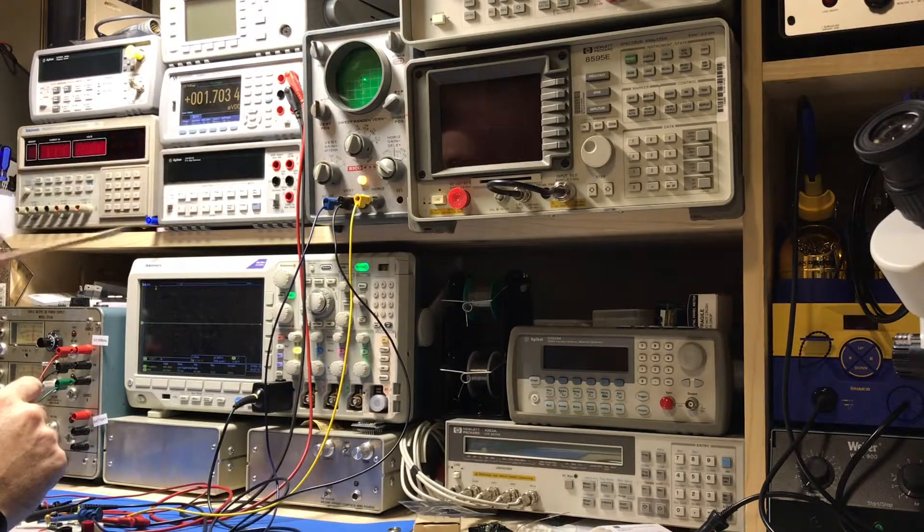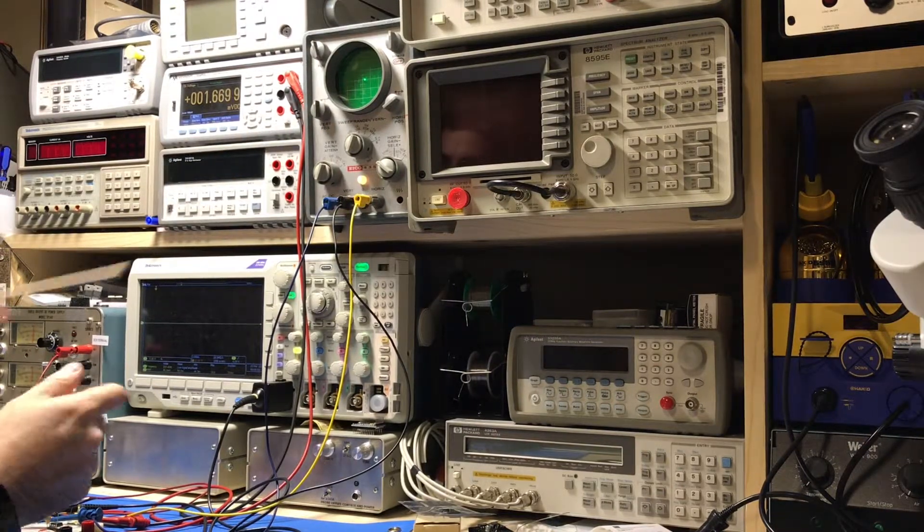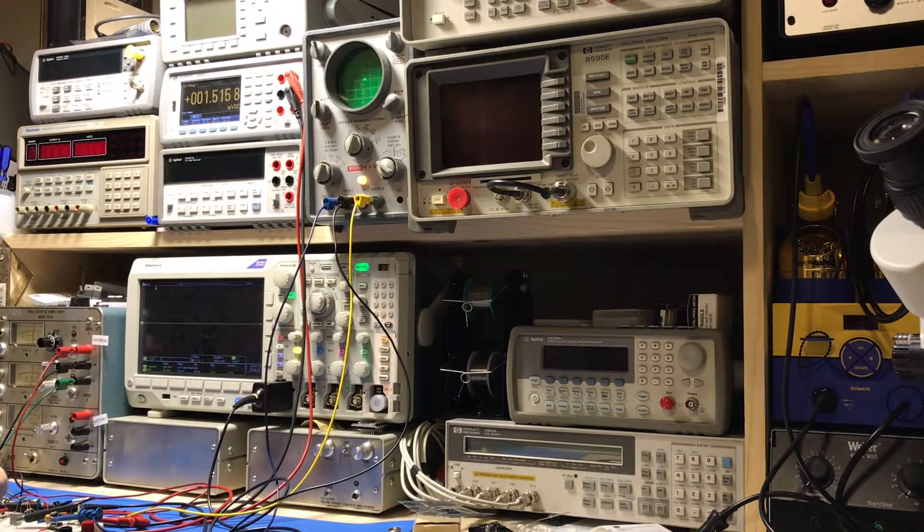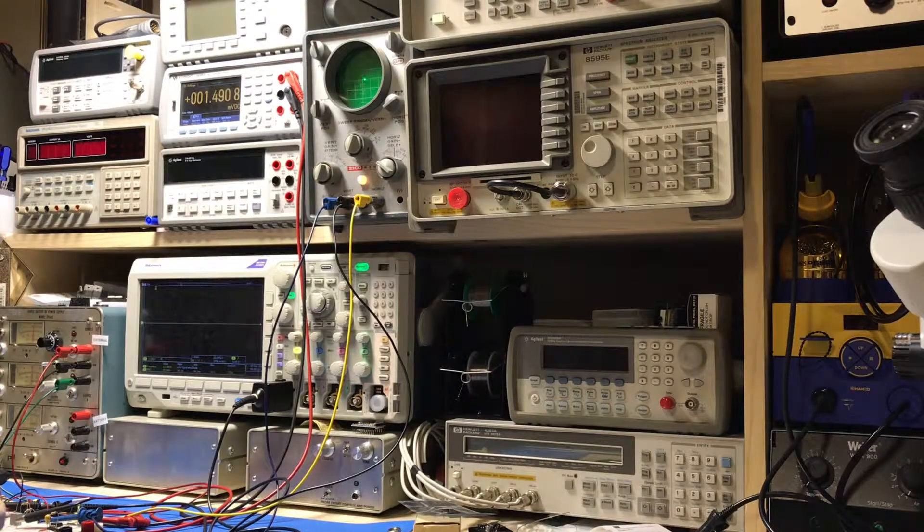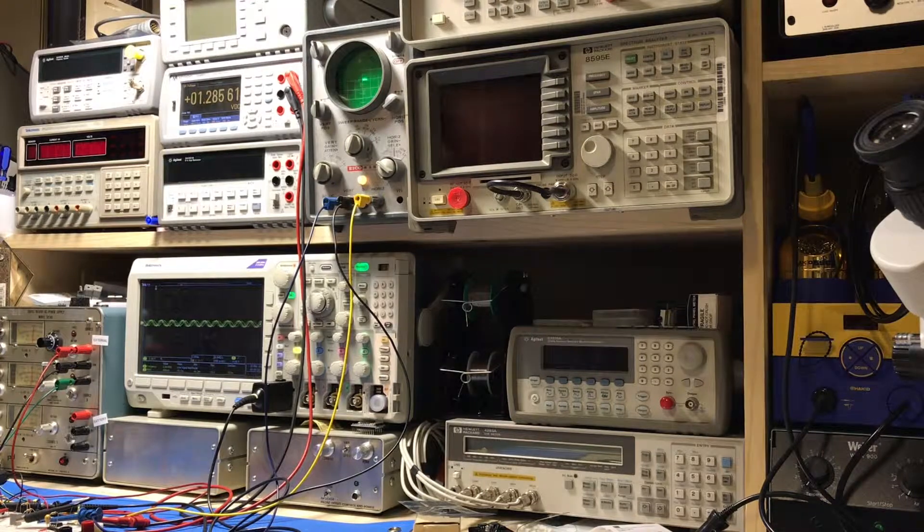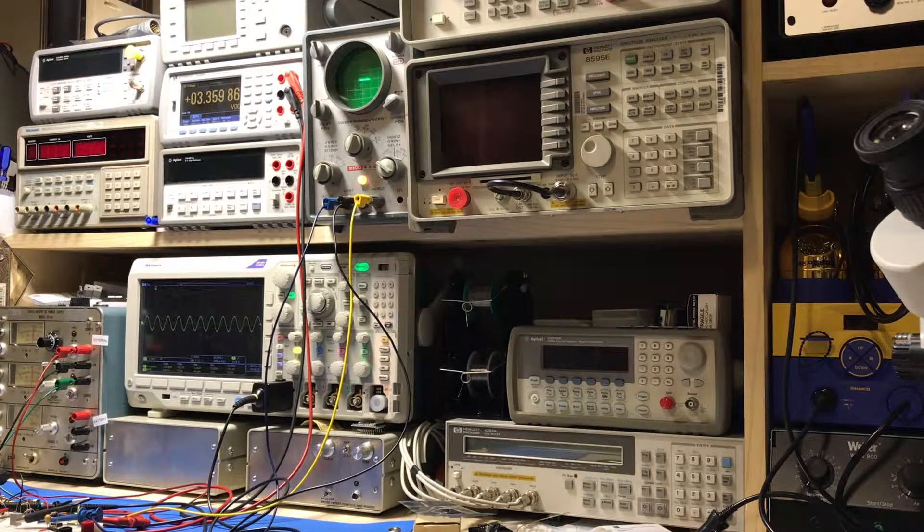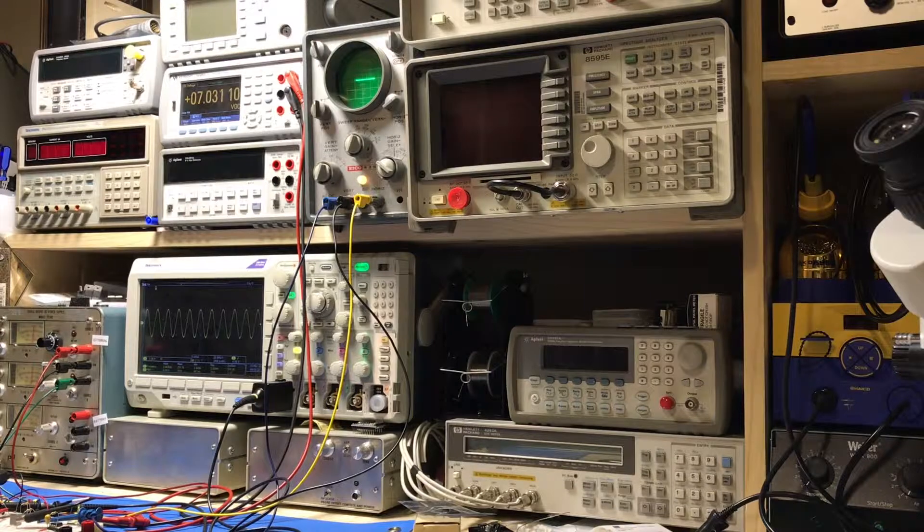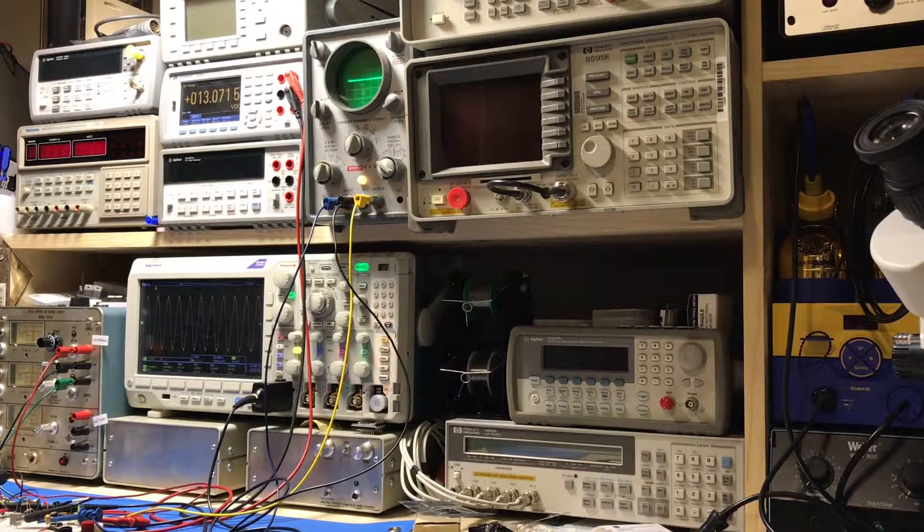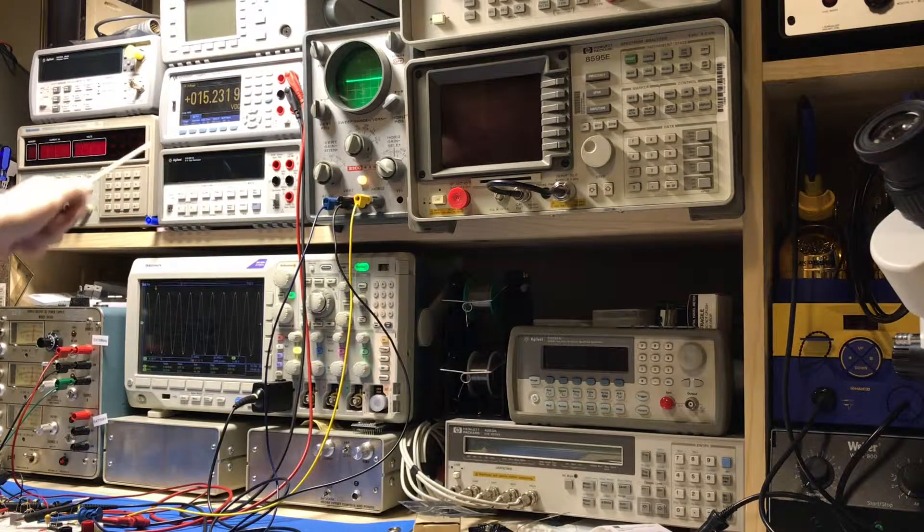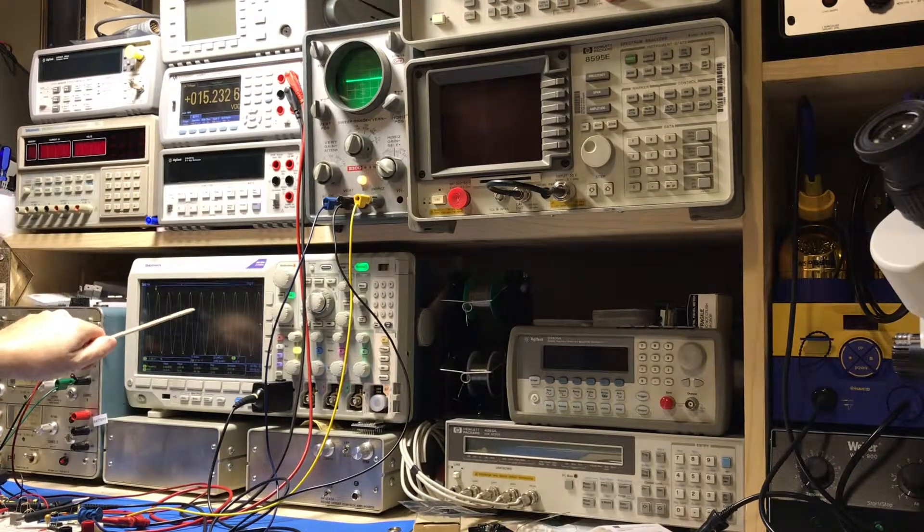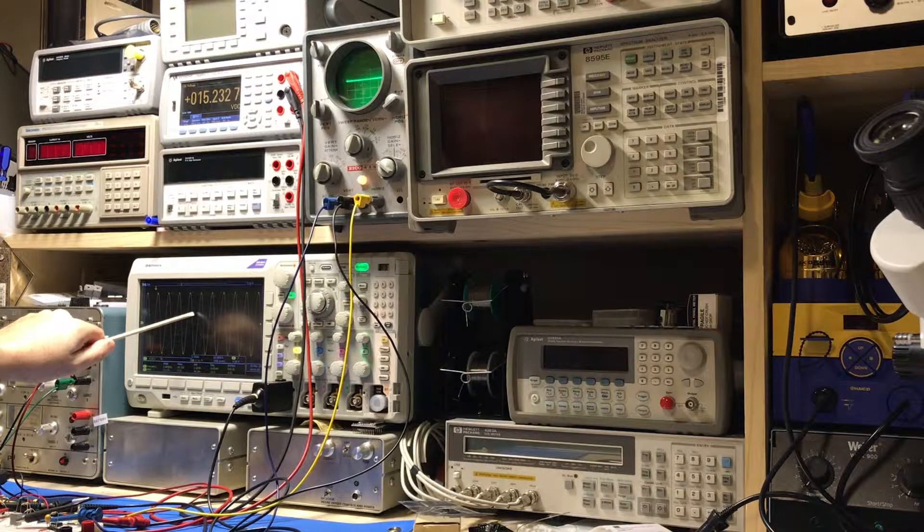Right now it's set to zero and there's no signal on the oscilloscope. First thing we'll do is run the test signal up. The way this is set up, it'll run up to about 15 volts on the output. So now we've got our test signal full up, showing about 15 volts, our sine wave signal produced by the curve tracer here on the oscilloscope.